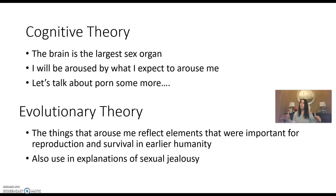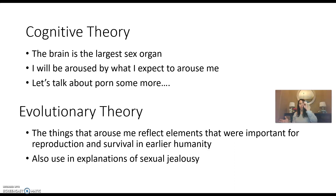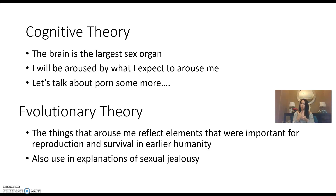And wider hips — before we had OB-GYN wings in hospitals, you just laid down and pushed out the babies. Wider hips make that slightly easier. Most of us know of scenarios where a woman had to have a C-section because her hips weren't spreading enough. Back in early humanity, wider hips would indicate you are more likely not to die in childbirth. So: not starving, some level of fitness, and a good chance you're not going to die while having my baby.